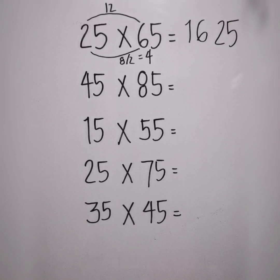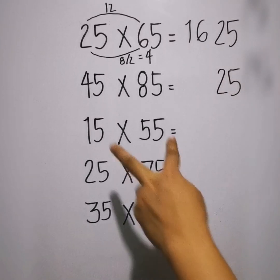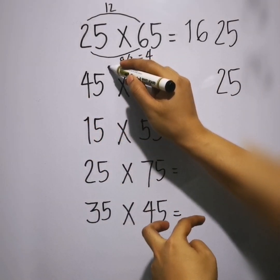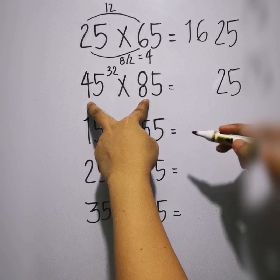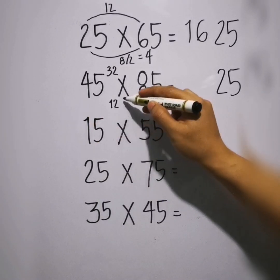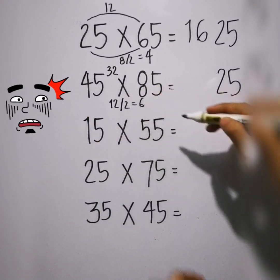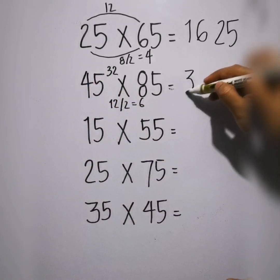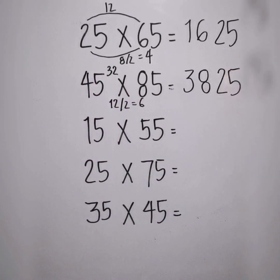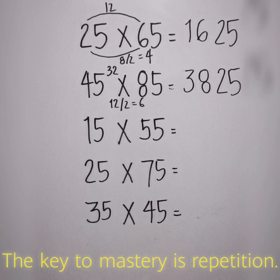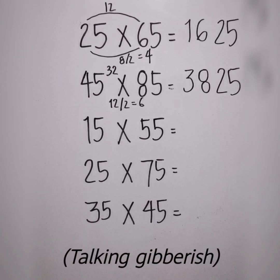Next example, we have 45 times 85. First step, put 25. Then multiply 4 by 8, we have 32. Add them: 4 plus 8 is 12. Half of 12 is 6. So 32 plus 6 is 38. The answer is 3825. The more you practice this, you can do it in your mind. The key to mastery is repetition — after solving 5 to 10 examples, you will get the hang of it.